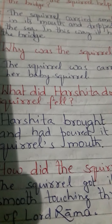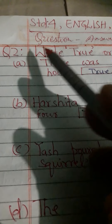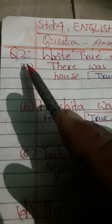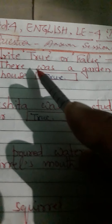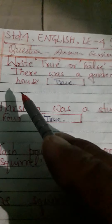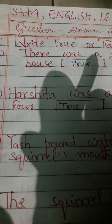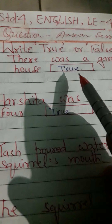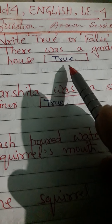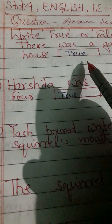In this way you have seen the question answers in sequence. Now we will participate in the second question. Question 2: Right true or false. True means satya and false means asatya. First sentence: There was a garden behind the house. This is true.